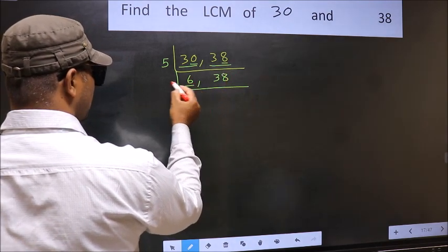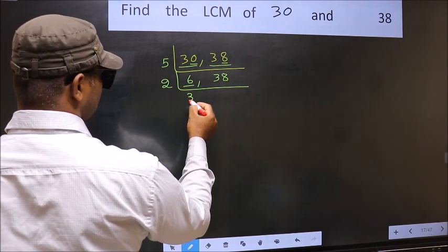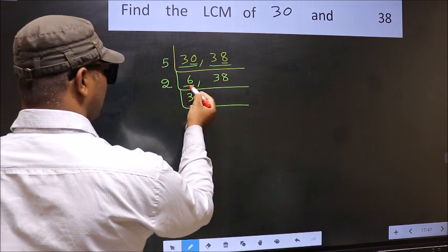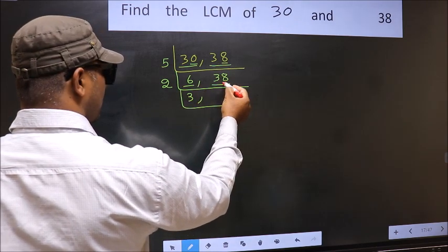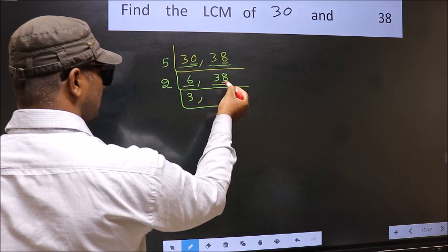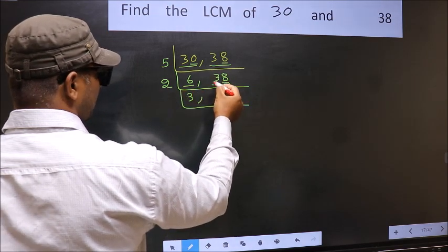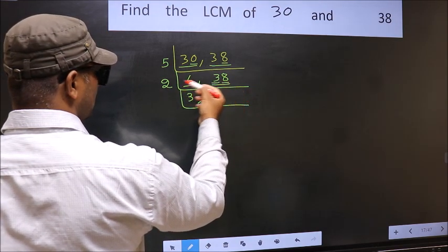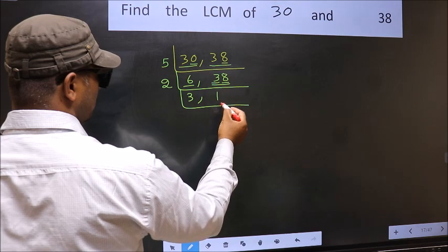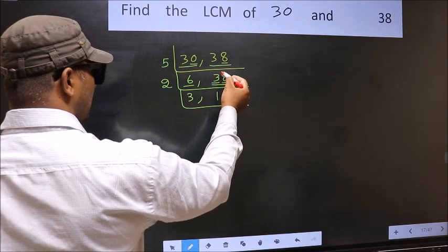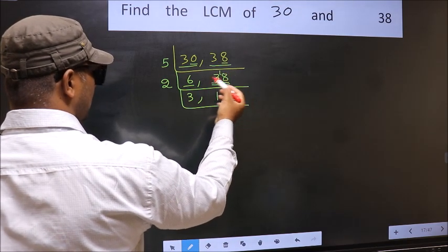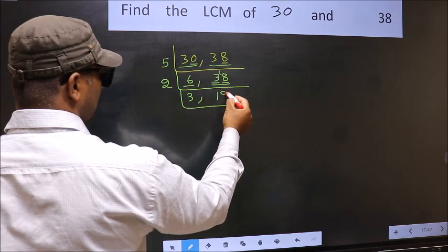Now here we have 6. 6 is 2, 3 is 6. The other number 38, last digit 8, even, so this is divisible by 2. First number 3. A number close to 3 in the 2 table is 2, 1, 2. 3 minus 2 is 1, 1 carried forward. 18. When do we get 18 in the 2 table? 2, 9 is 18.